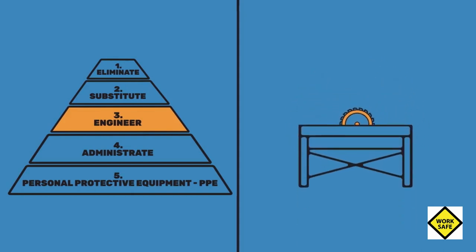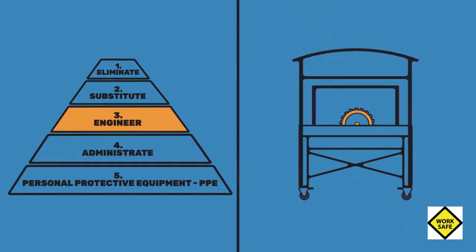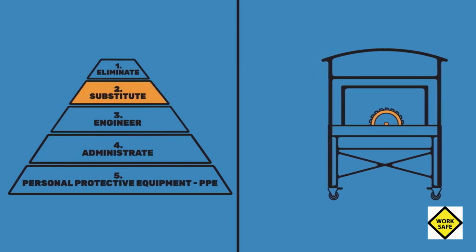Going another step up the Hierarchy of Controls pyramid means finding ways to substitute the potentially risky equipment for equipment that is potentially less hazardous to workers.